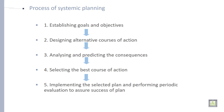What are the processes of systematic or scientific planning? The first step of scientific or systematic planning is to establish goals and objectives. What is your long-term vision and what is your short-term vision? What is your long-term target and what is your short-term target?